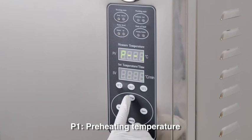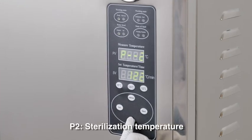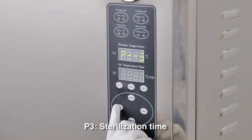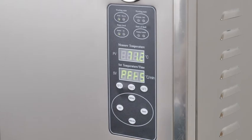P1 Preheating Temperature, P2 Sterilization Temperature, P3 Sterilization Time, P6 Cycle Coder recall the machine usage codes.